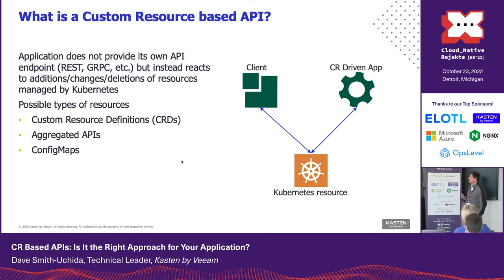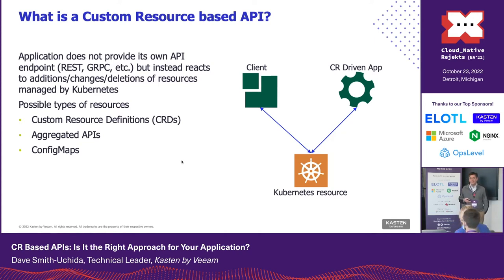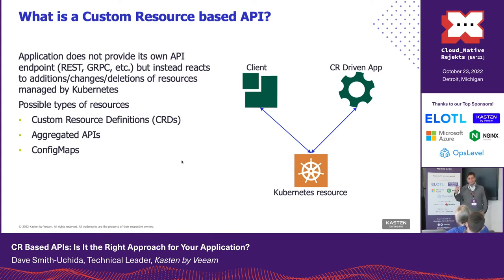What is a custom resource-based API? This is one where your application needs a way to interact with something, but it doesn't actually provide an API endpoint — no REST, no GRPC being provided by your application. Instead, clients will talk to your application via changes to Kubernetes resources. These could be custom resource definitions — that's a pretty common one. There's also another path called an aggregated API server. And you can even do things like config maps — write out config maps of certain types and have your application watching for those.